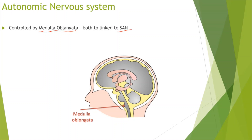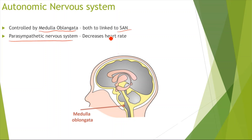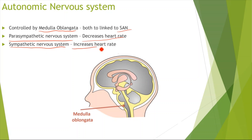There are two types of action the autonomic nervous system can take. One is via the parasympathetic nervous system, which decreases the heart rate. On the other hand, the sympathetic nervous system increases the heart rate. A useful memory aid: because sympathetic begins with S, it stimulates and increases the heart rate.